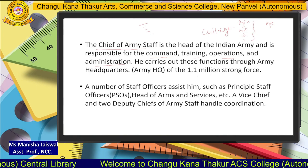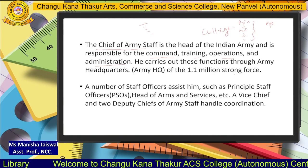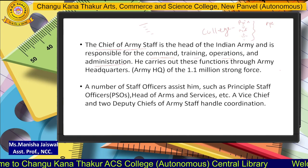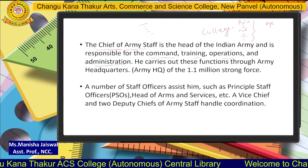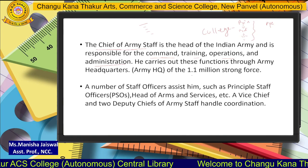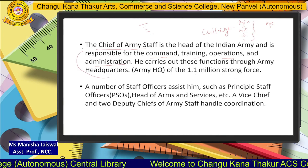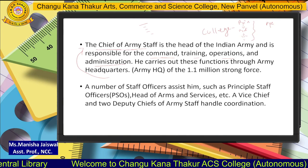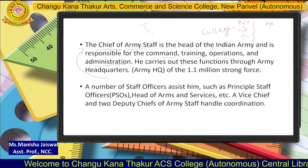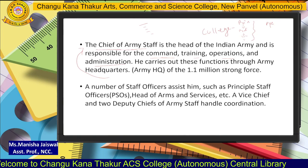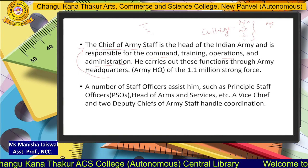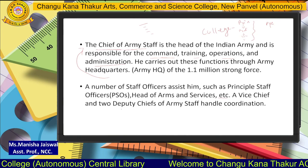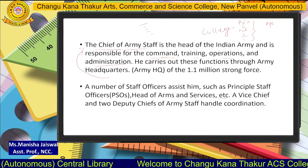Of the 1.1 million strong force — we know that Indian Army ranks third in the whole world — from our population, 1.1 million strong force comes under the Chief of Army Staff. A number of staff officers assist him, such as Principal Staff Officers (PSOs), heads of arms and services, etc. Vice Chief and Deputy Chiefs of Army Staff handle coordination.